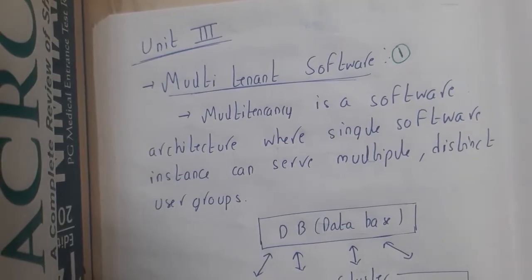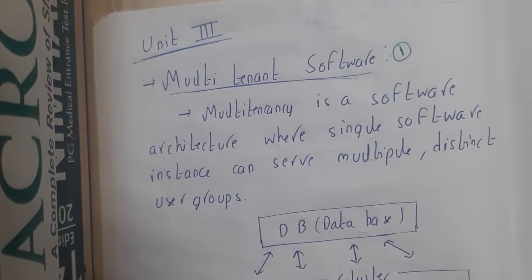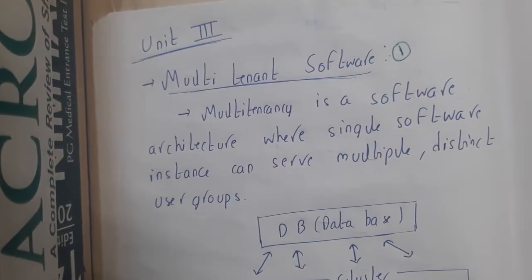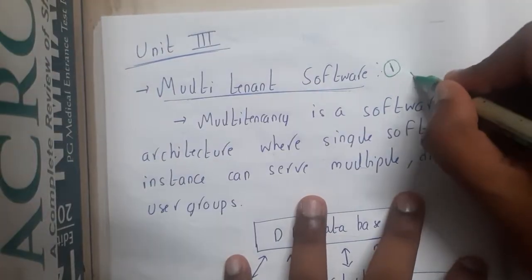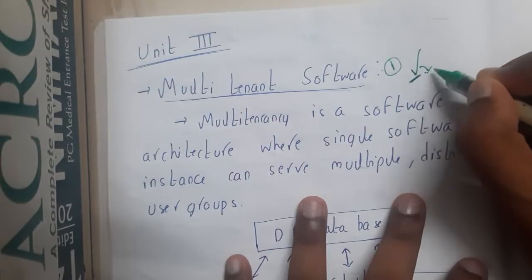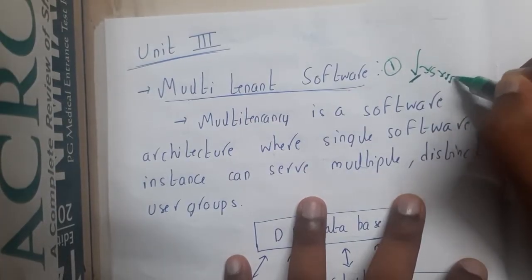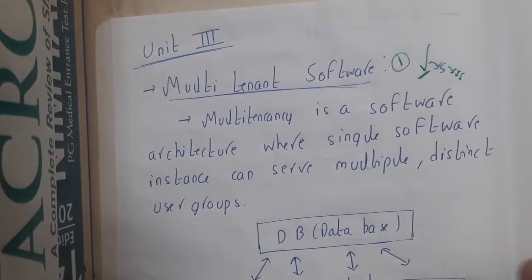Hello guys, we are back with our next lecture. In this lecture, let us start the third unit of cloud computing. The first topic in this unit is multi-tenancy and single tenancy. Basically, first let us go through multi-tenancy, then we will move on to single tenancy, then we will discuss the advantages and disadvantages of both of them.